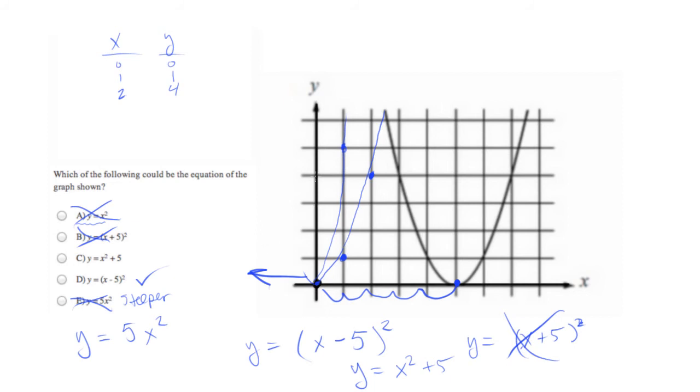Well, that actually has the function of moving the whole function up. So it's the same steepness, but it's been shifted up by five. That's not what we want either. So answer choice C is out.